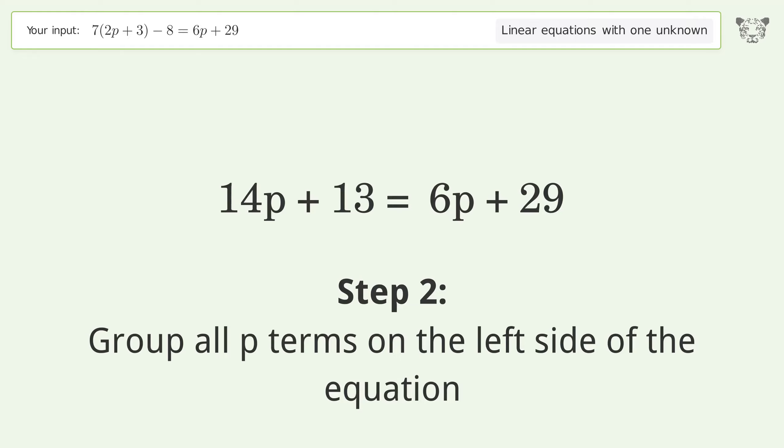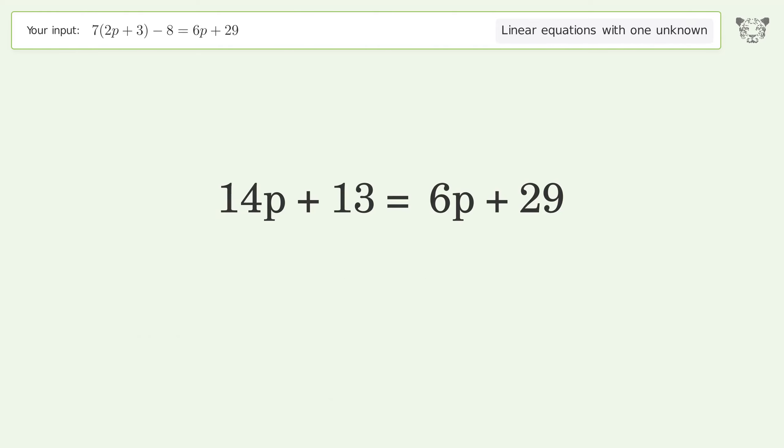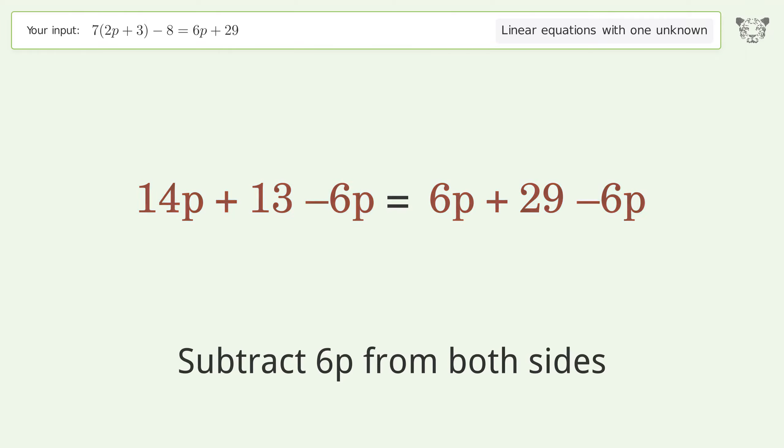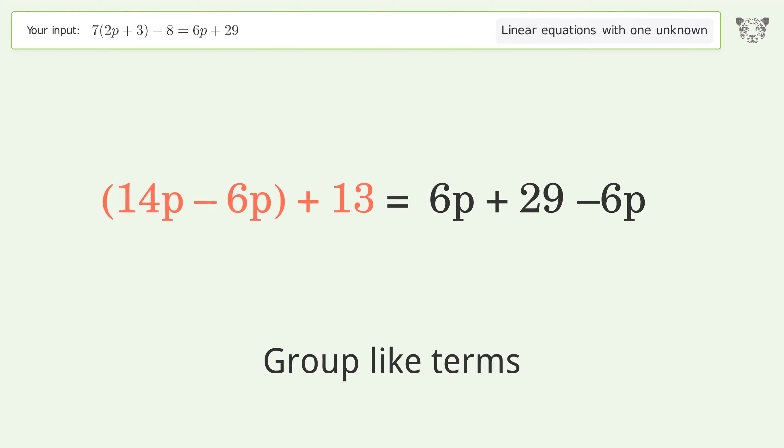Group all p terms on the left side of the equation. Subtract 6p from both sides. Group like terms.